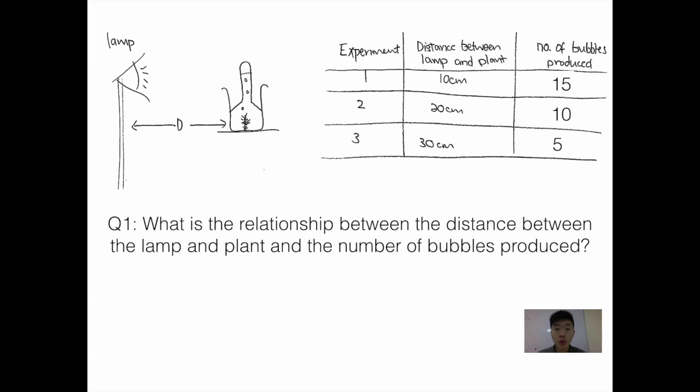To tackle this kind of question, we must first find out what are the two variables involved, which can be found in the question itself. The first one would be the distance between the lamp and the plant, and the second would be the number of bubbles produced.